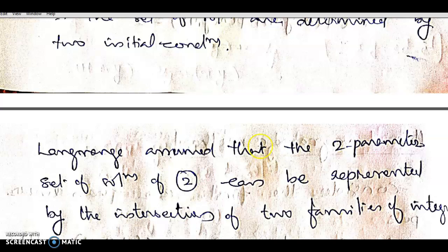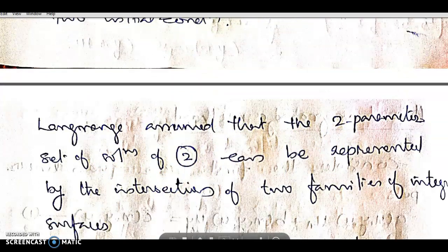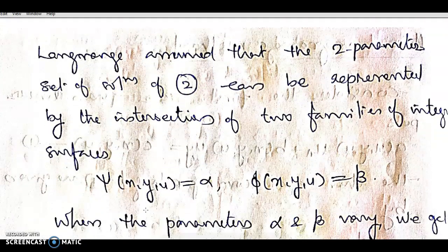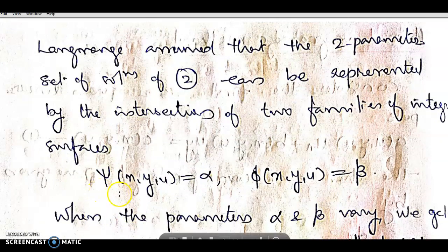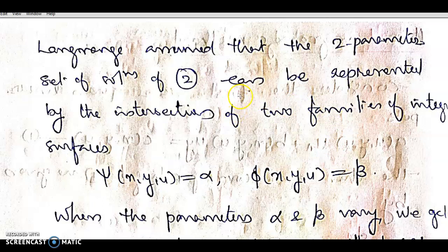Lagrange assumed that the two-parameter set of solutions of equation 2 can be represented by the intersection of two families of integral surfaces: ψ(x,y,u) = α and φ(x,y,u) = β.